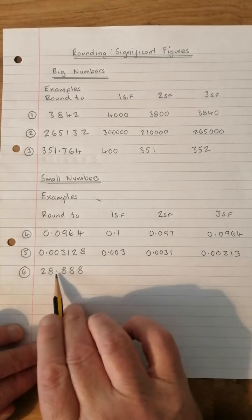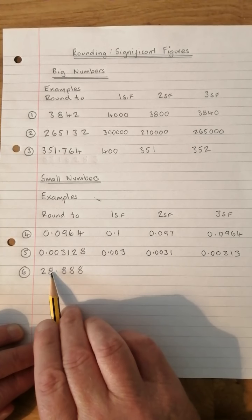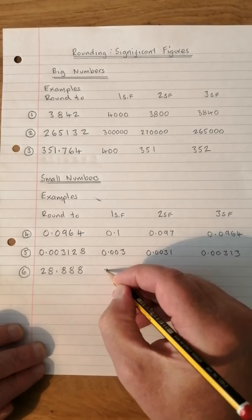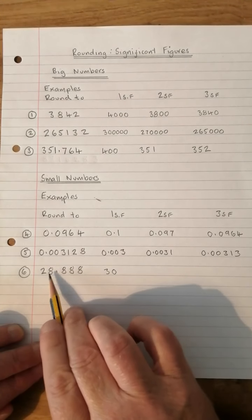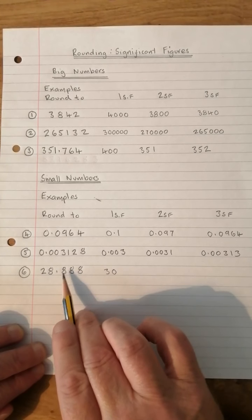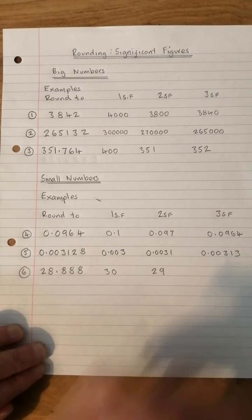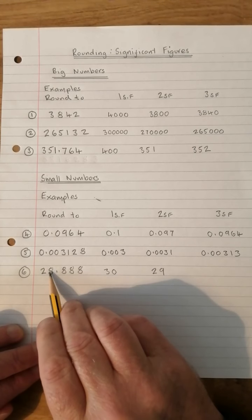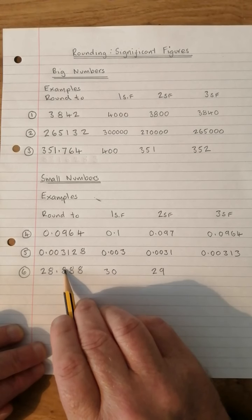And this one here — a mixture of whole numbers and decimals. One significant figure: there's the 2; that 8 changes it to 3, so the answer is 30. Two significant figures: we're dealing with 28 — does it turn into 29? Yes it does, so the answer is 29. And three significant figures: that 8 changes the last digit to a 9, so the answer is 28.9.